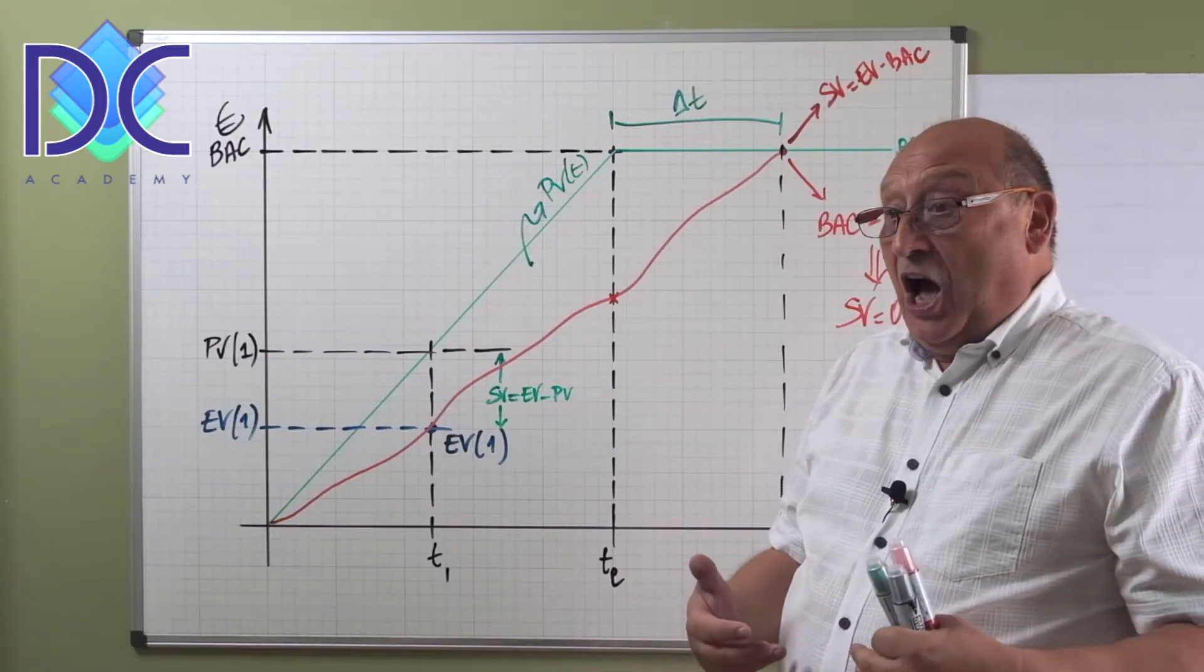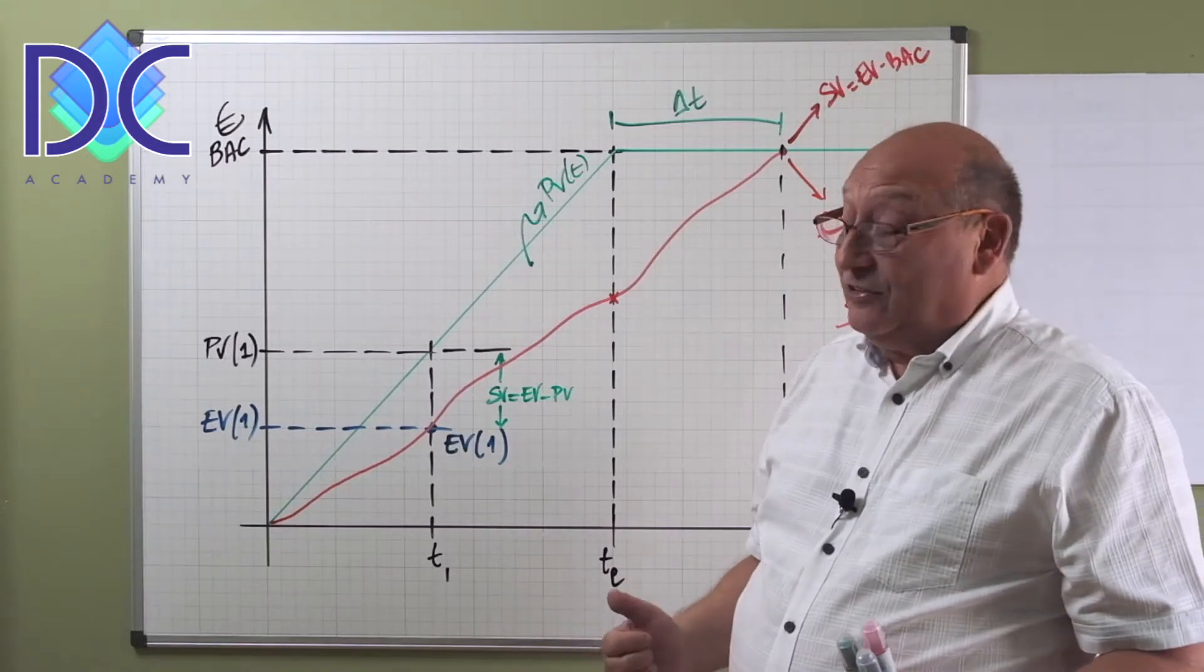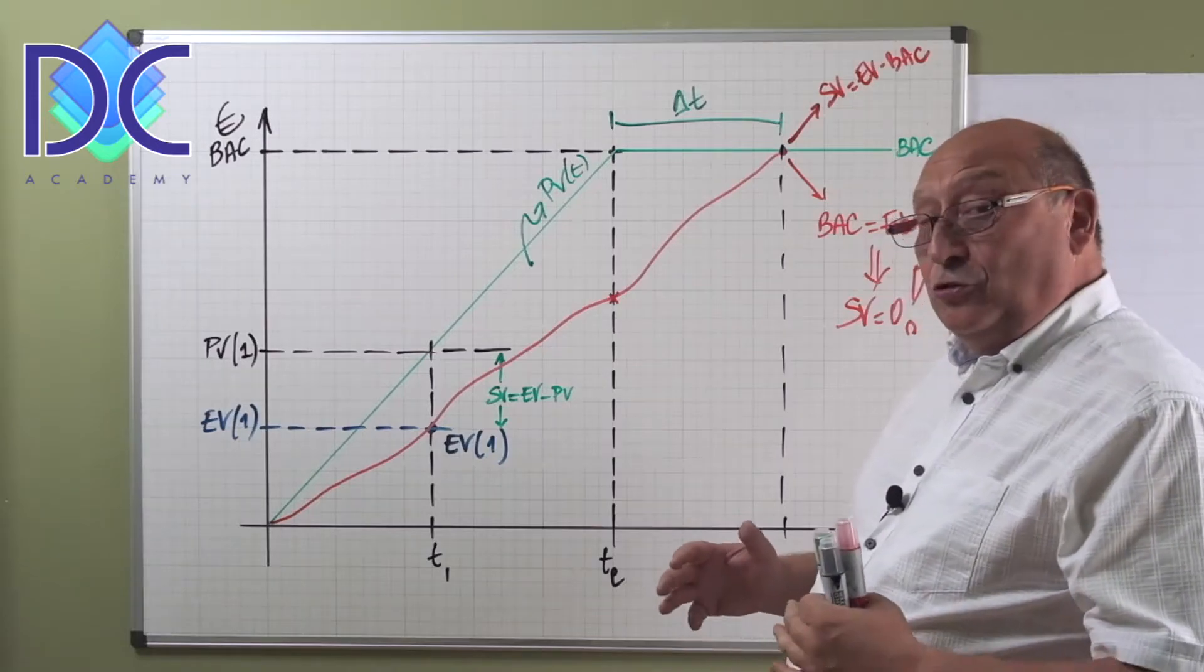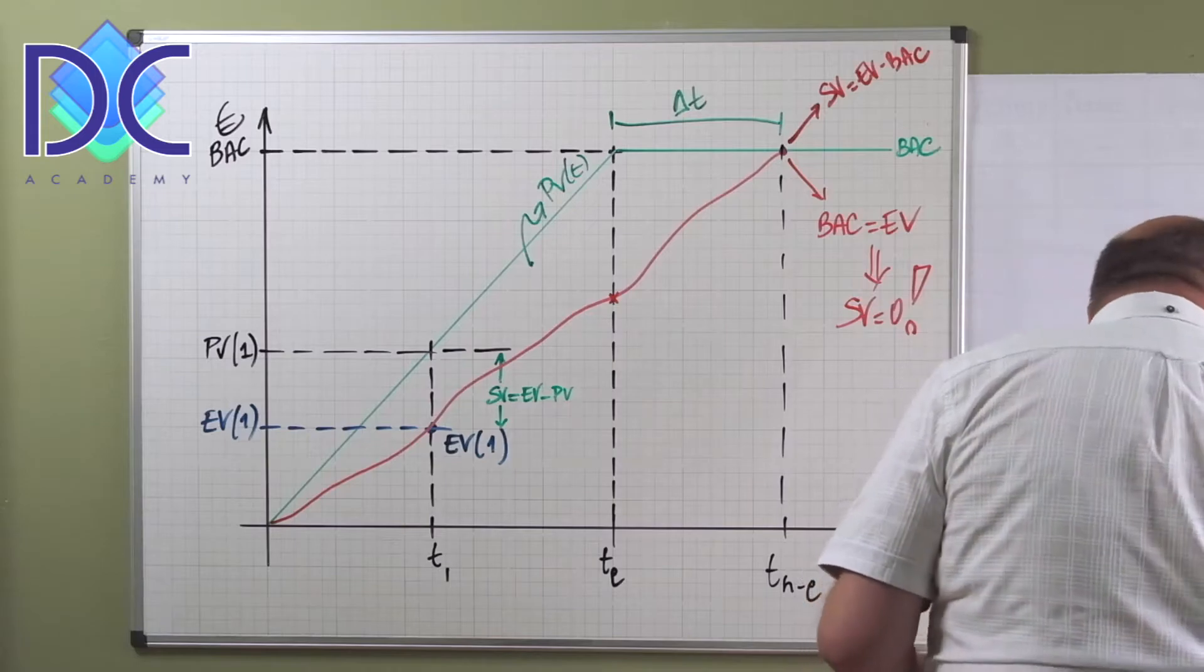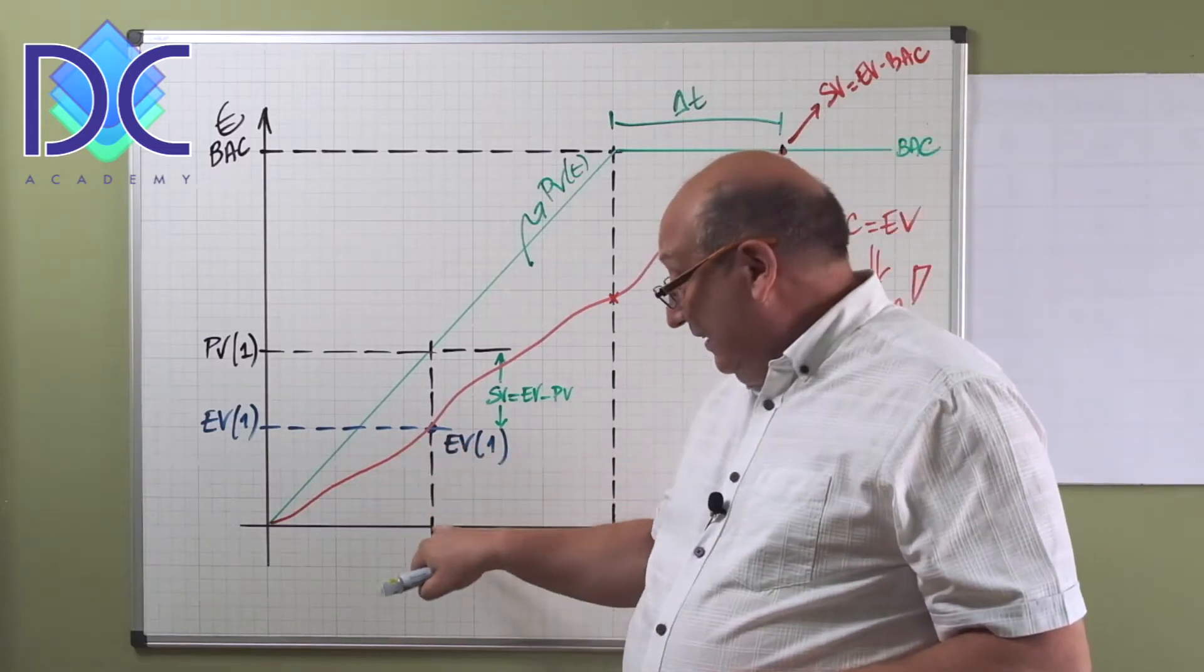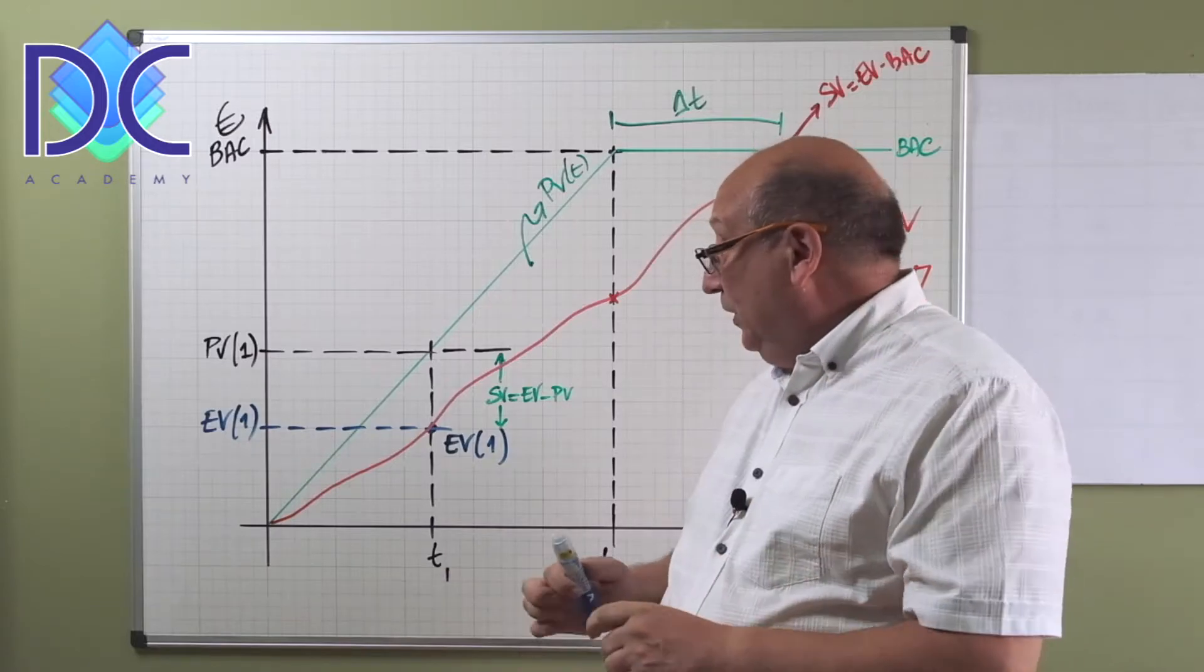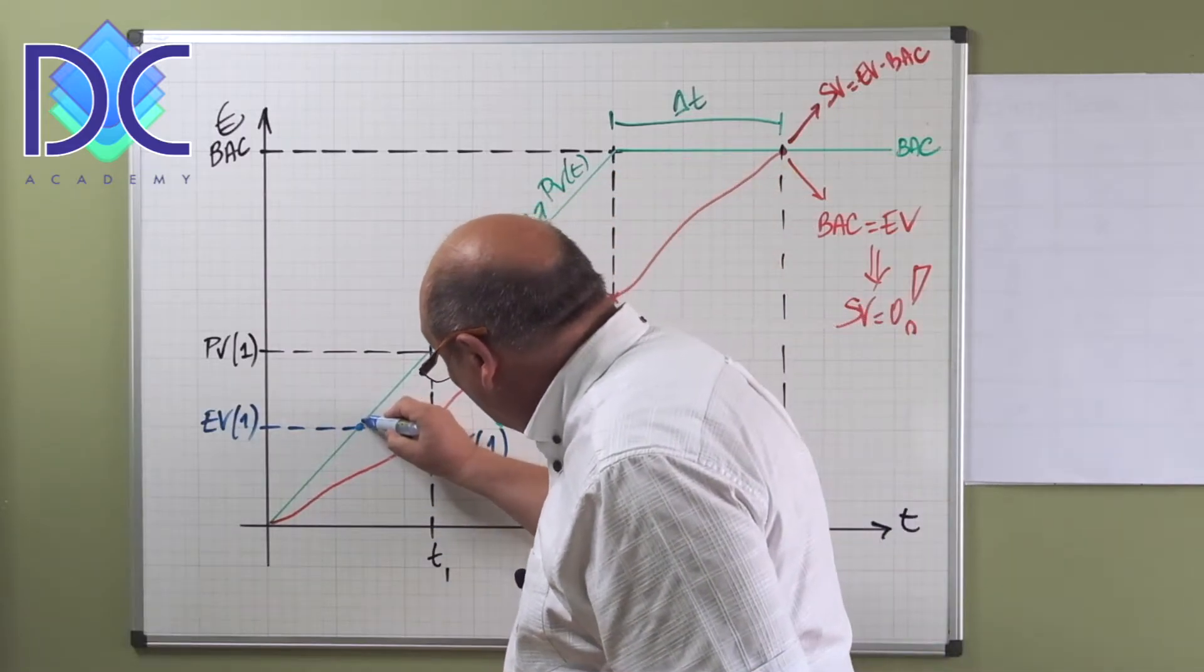And that's not really good because we have an impression here that we are improving, that our schedule variance is getting smaller. So basically we could say we are in fact improving our performance, our schedule performance, and it's not the case. Now to remediate this, we define a second parameter and we say,